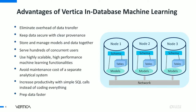Machine learning in Vertica is built on top of the distributed analytic database architecture. It eliminates the overhead of data transfer, keeps your data secure, and makes storing and managing models much more efficient. You can serve many concurrent users at the same time, and it's highly scalable, avoiding the maintenance cost of a separate system. Importantly, all algorithms — analytics, advanced analytics, or machine learning — are distributed not just across nodes in the cluster but also use multiple threads and processes on each node.